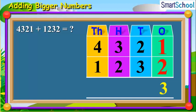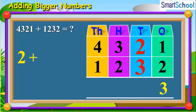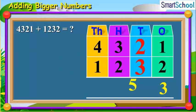Now, add the tens together, which will be 2 plus 3 is equal to 5 tens. Now, place 5 at the tens place.